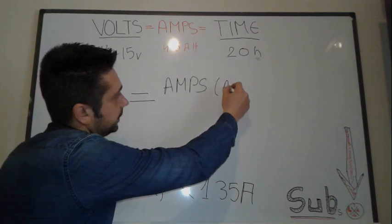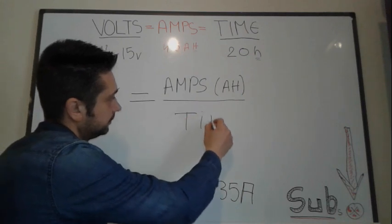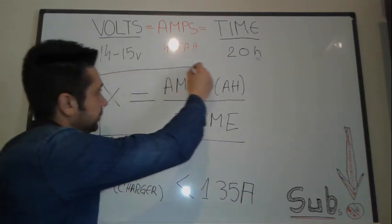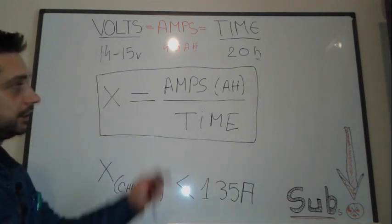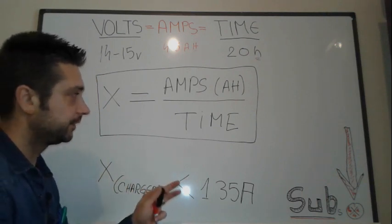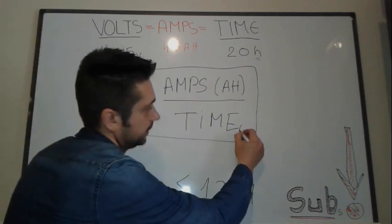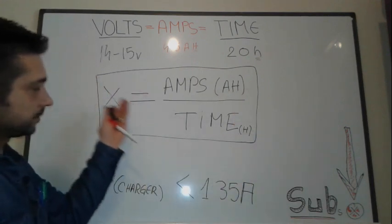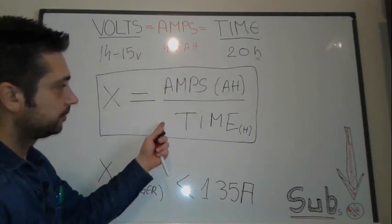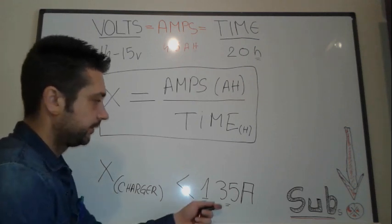Which should be measured in AH, not just plain simple amps, over or divided by time. So this is our formula for finding the needed current for each and every 12 volt battery to calculate how big is going to be your charger. With the help of this formula you're going to know that it should be less than 1.35.